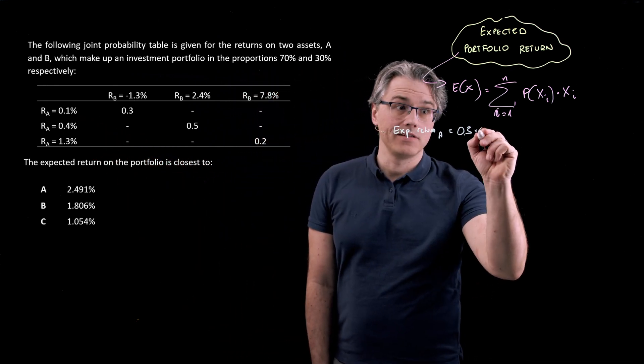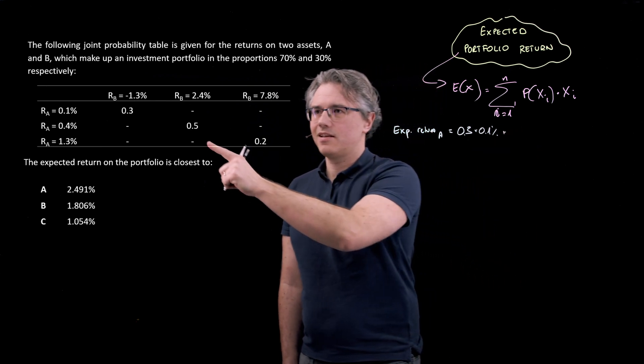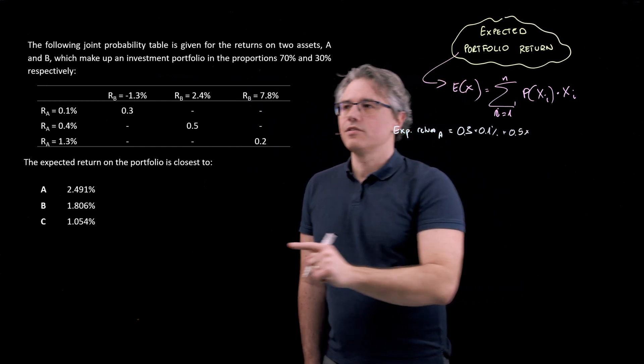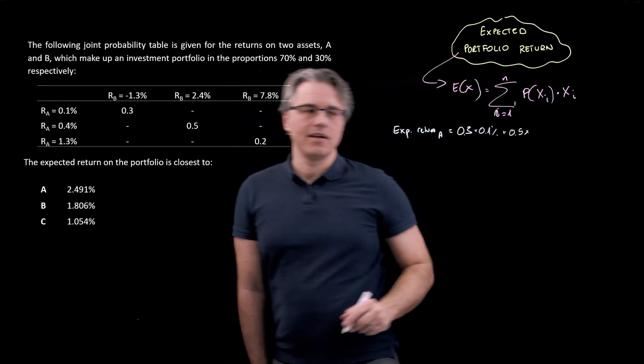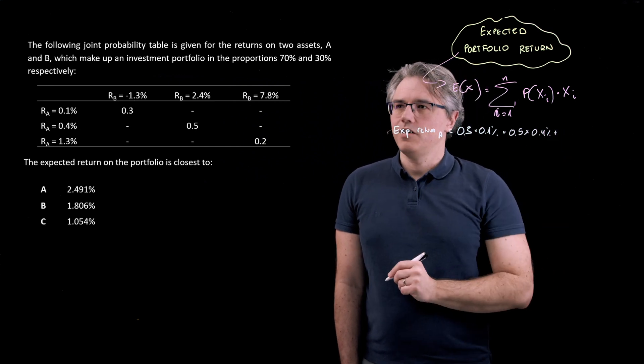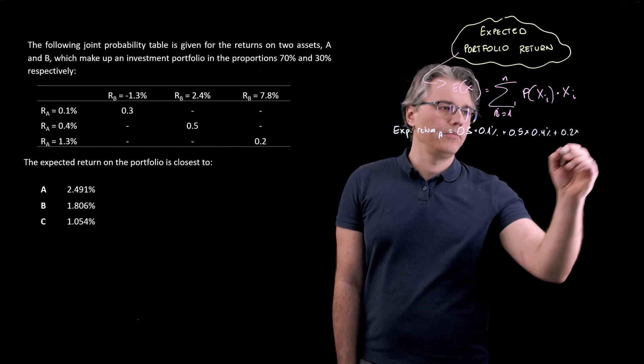Then the second probability, 0.5 times the return associated with that, so 0.4. And finishing off with the last one, that's 0.2 times 1.3.